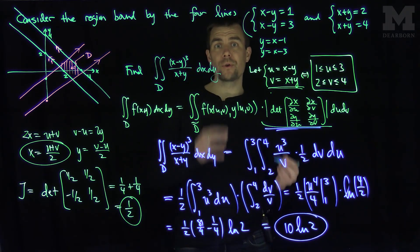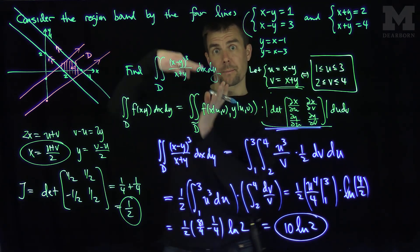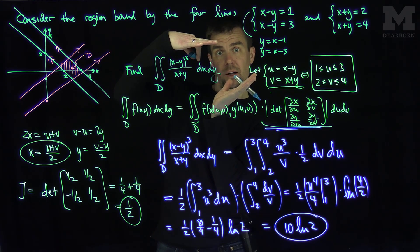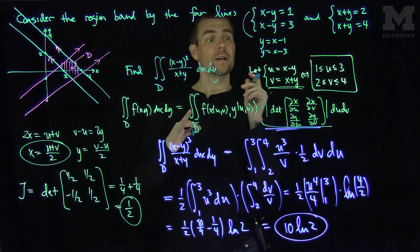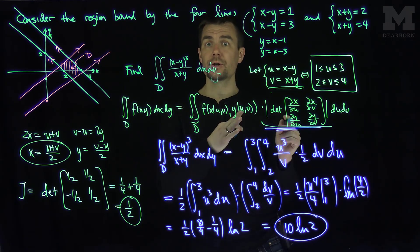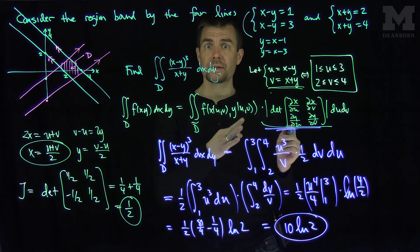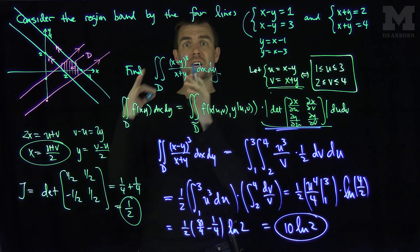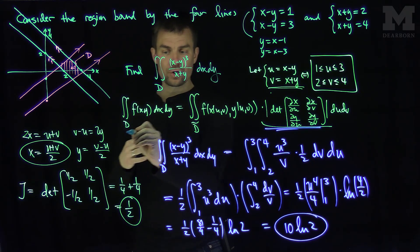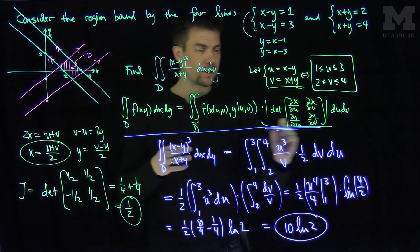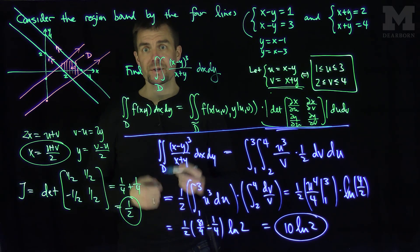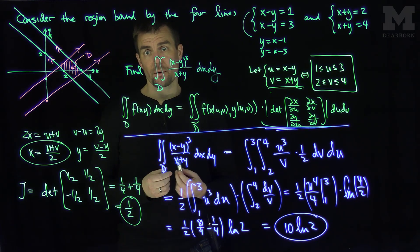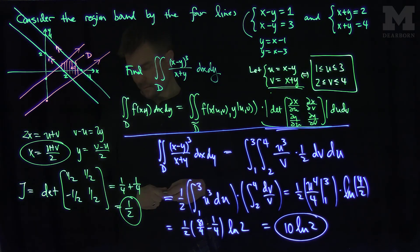So when our region of integration is fairly complicated — like a tilted or rotated parallelogram — we can introduce a linear change of coordinates and apply the change of variables theorem for multiple integrals to find the answer in a relatively straightforward way. Thank you very much.